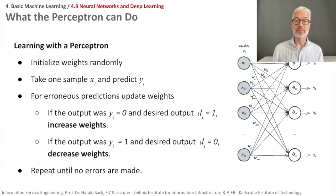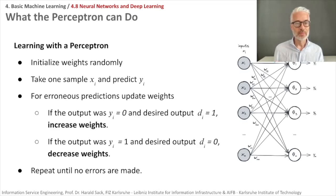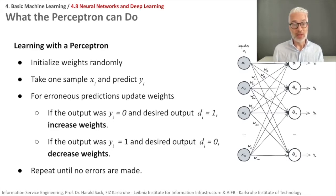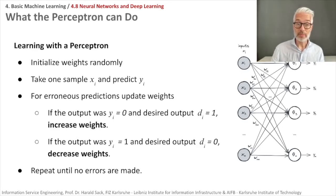Training a perceptron model means we have to adapt the weights wᵢⱼ until they fit the input-output relationships of the given training data. We initialize the weights randomly — or with zero — then take one sample xᵢ and predict yᵢ. For erroneous predictions, we update the weights: if the output y was zero and the desired output was one, we increase the weight; if the output was one and the desired output was zero, we decrease the weight. We repeat this until no errors are made anymore.